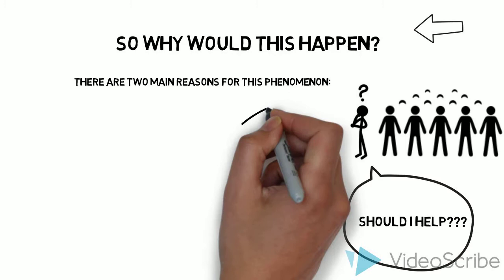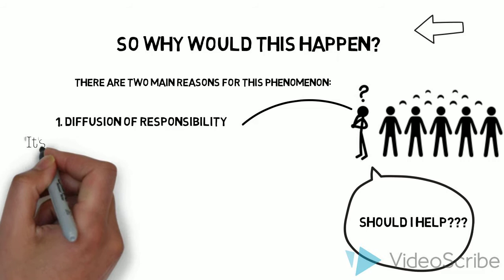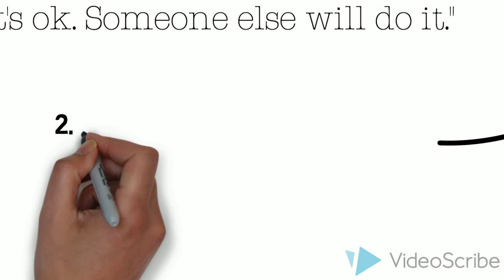There are said to be two reasons for the bystander effect. One, diffusion of responsibility. It means that onlookers think someone else will intervene and therefore feel less responsible.